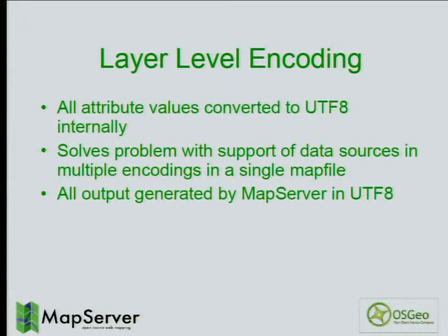Something else being added in version 7 is layer-level encoding. If you deal with non-English languages or data sources in different encodings, you may have had difficulty writing expressions in your map file because the map file encoding and data encoding didn't match. Now, in each layer you can specify the encoding of the data source. Internally, everything will be UTF-8 inside MapServer, and all outputs — including OGC documents — will always be generated in UTF-8 regardless of the data source encoding.